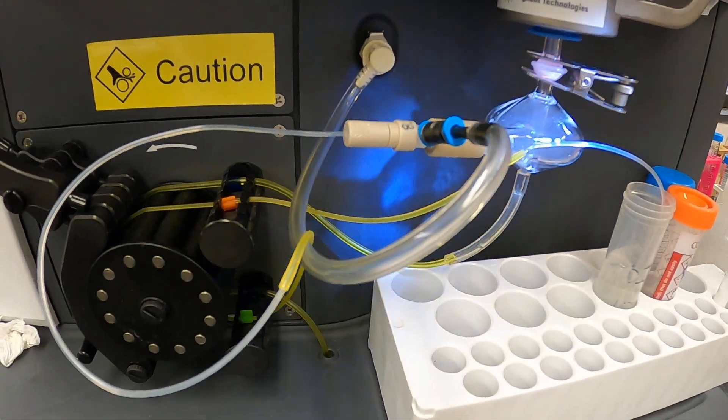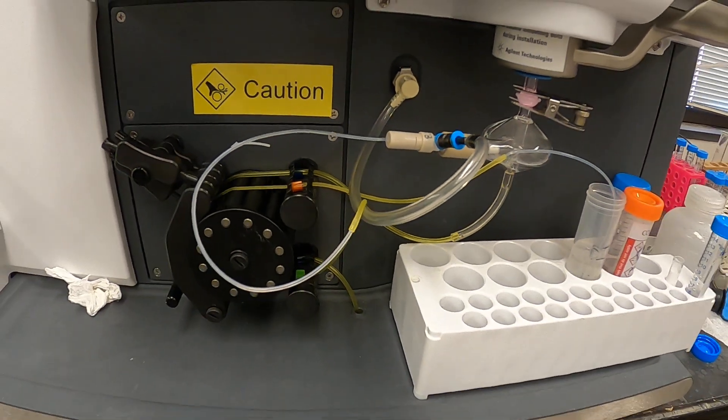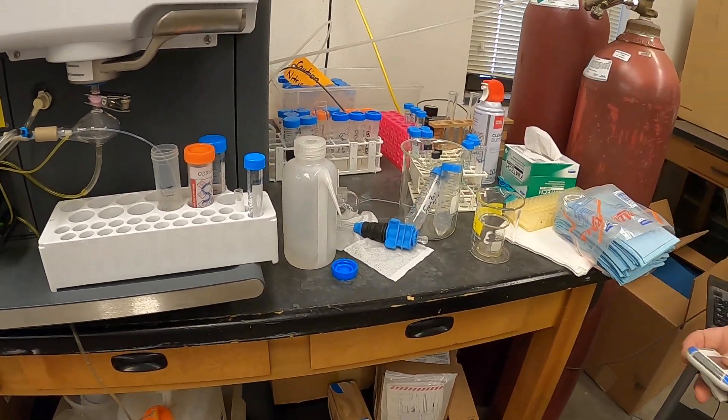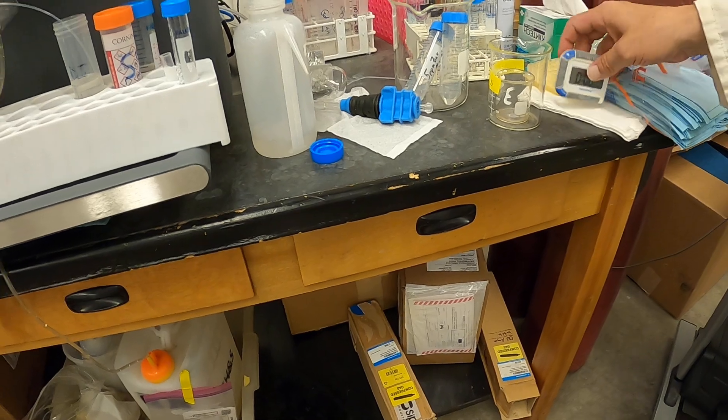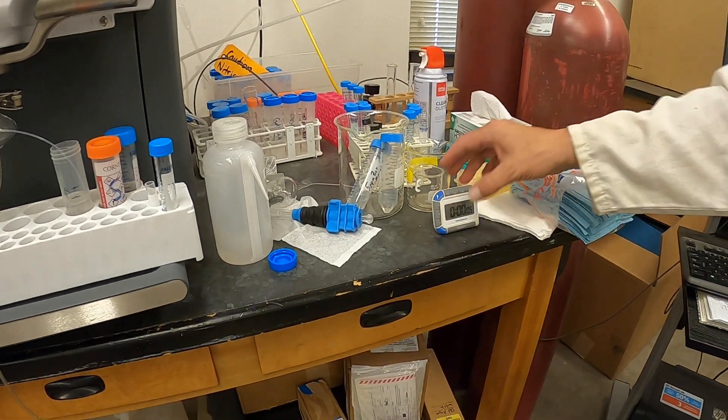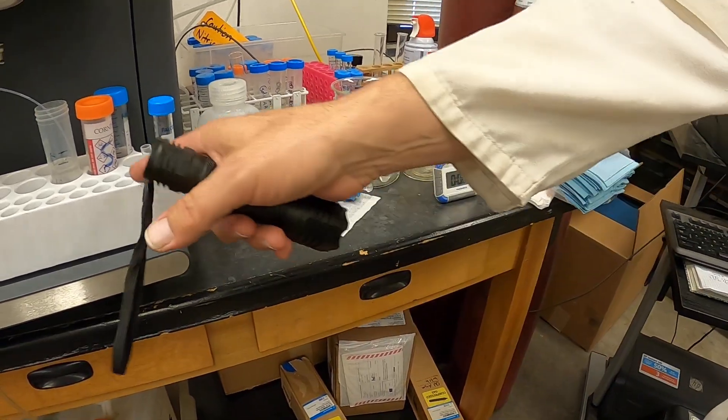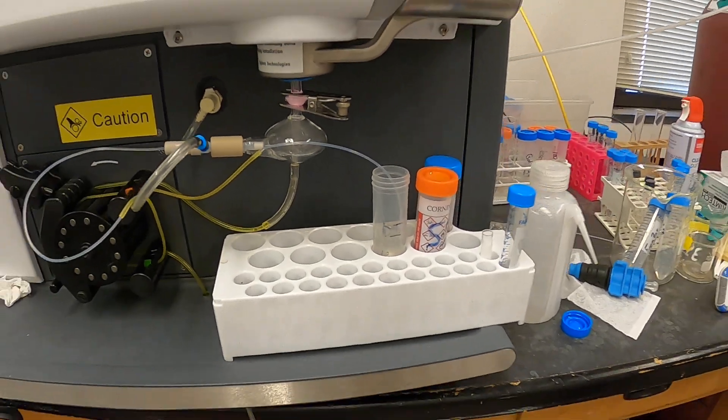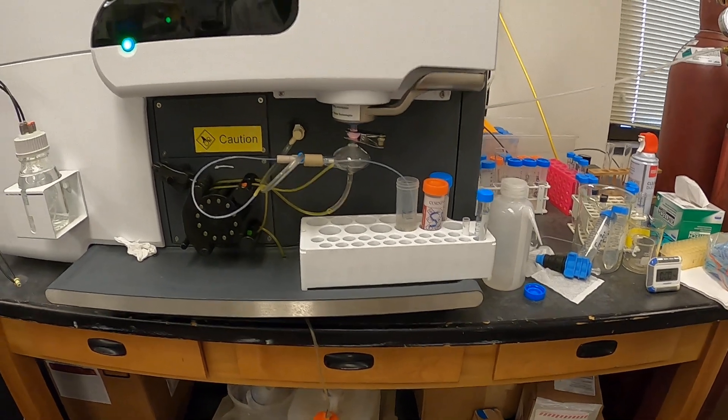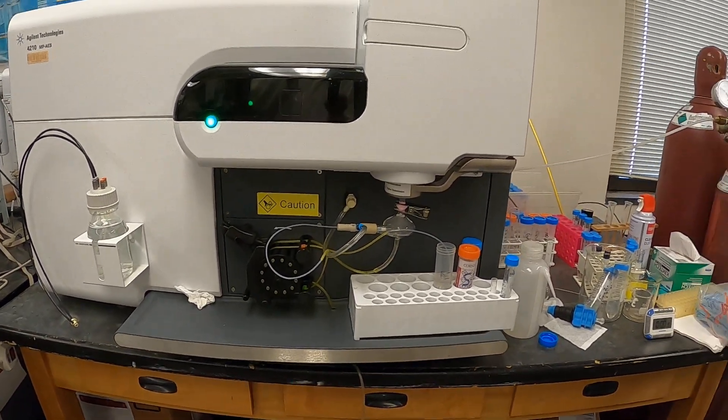All right, we've got the torch on. It needs to warm up for about a half hour. So now we're going to start the timer. Once it gets to about 20 minutes, we're going to switch over from water to our 5% trace metal nitric acid. Then we'll come back and tune the instrument. All right, so we'll see you here in a minute.